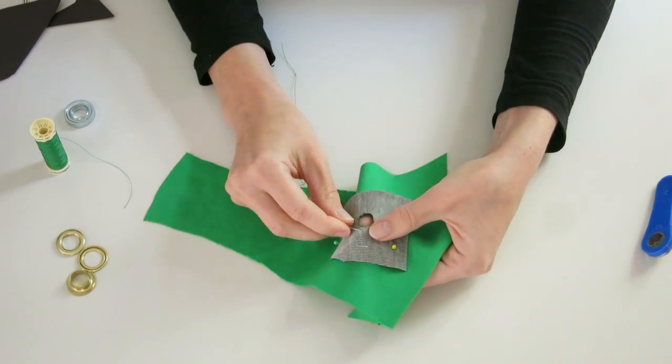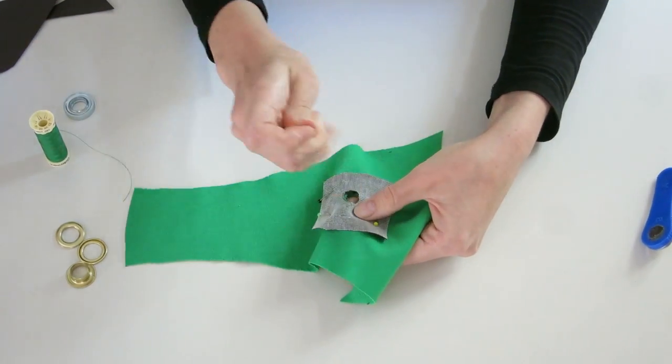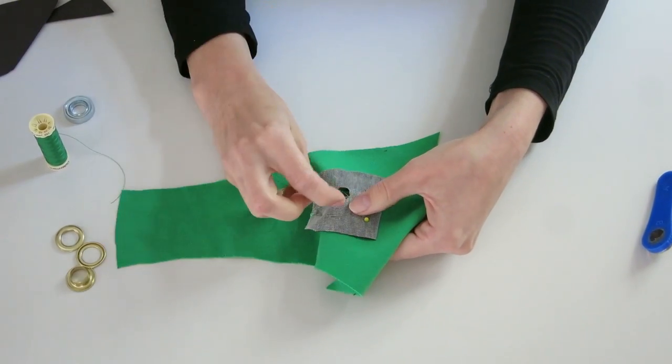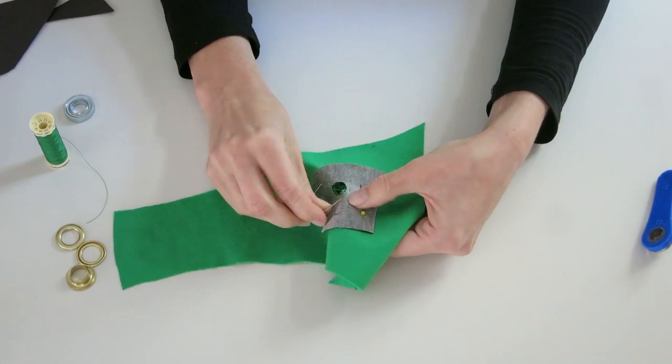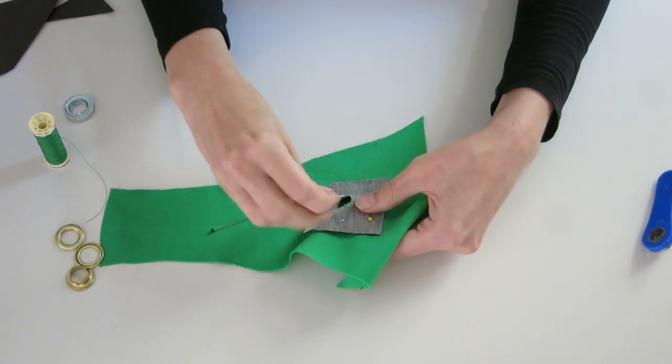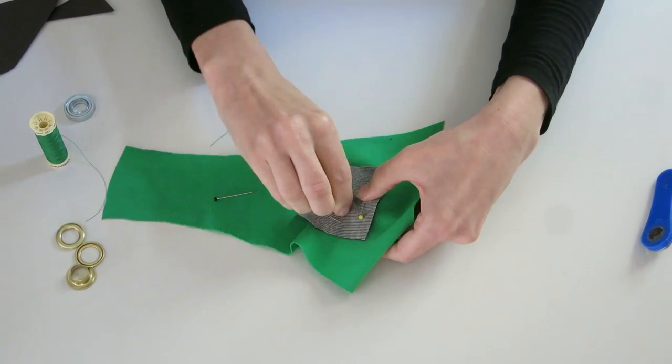Then I will sew both fabrics to each other, and this I'm usually doing by hand and just with a few rough stitchings. Just try to be as close to the hole as possible because later on the stitchings will be covered by the metal eyelet.